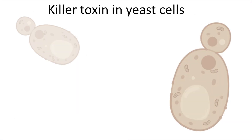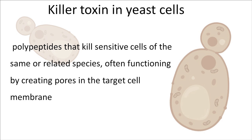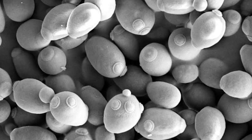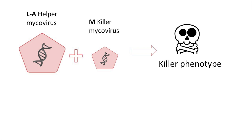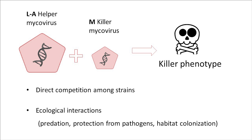Killer toxins in yeast cells are polypeptides that kill sensitive cells of the same or related species, often functioning by creating pores in the target cell membrane. The classical organism for research of mycovirus-related production of killer toxins is baker's yeast. Production of killer toxins is associated with the helper LA mycovirus and the small satellite mycovirus M, which encodes the killer toxin. The combination of LA and satellite M mycoviruses leads to the production of killer toxins by yeast cells. Killer toxins provide benefits in terms of direct competition among strains and possibly ecological interactions, including predation, protection from pathogens, and habitat colonization.